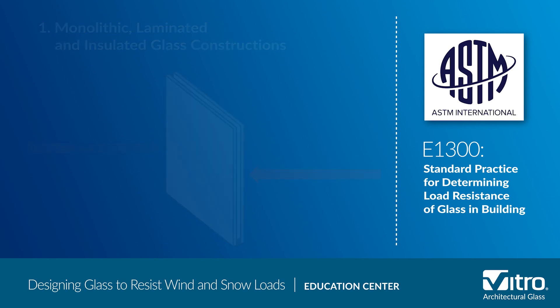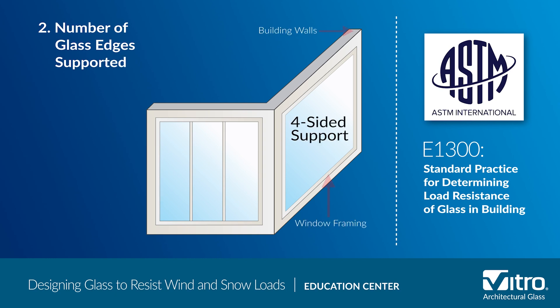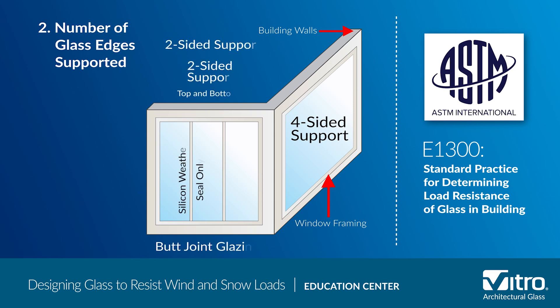Second, the number of glass edges supported. Typically, all four sides are supported in a framed window or a four-sided structural silicone glazing. However, some applications can be two-sided support, such as butt joint glazing, or sometimes even three-sided or one-sided supports.